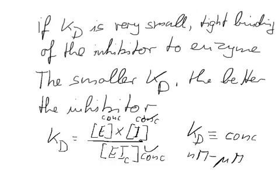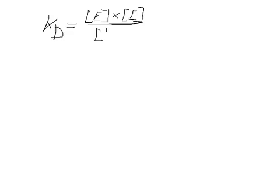Now we can define another constant. We can say we had Kd equals enzyme times inhibitor divided by enzyme-inhibitor. So that was our dissociation constant. We can also define a binding constant.